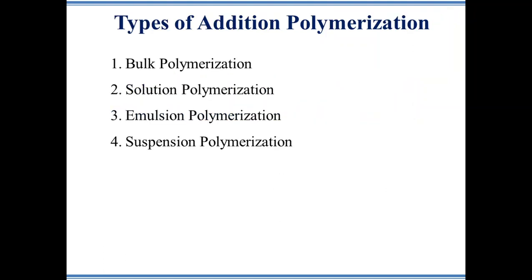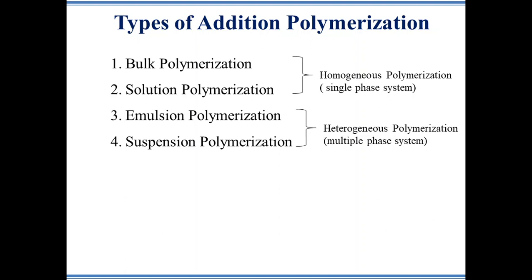There are four types of addition polymerization: bulk polymerization, solution polymerization, emulsion polymerization, and suspension polymerization. Bulk and solution polymerization fall under the category of homogeneous polymerization, while emulsion and suspension polymerization are known as heterogeneous polymerization.